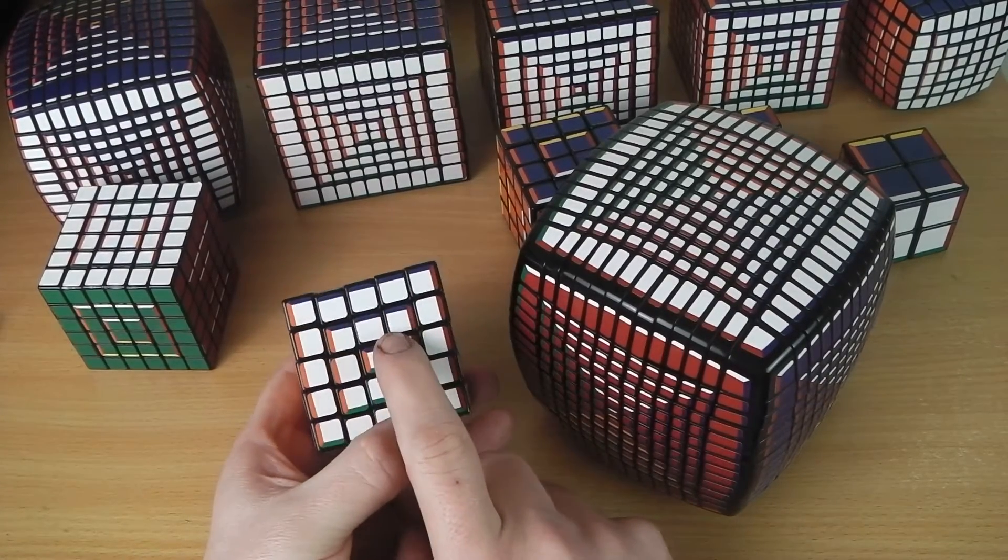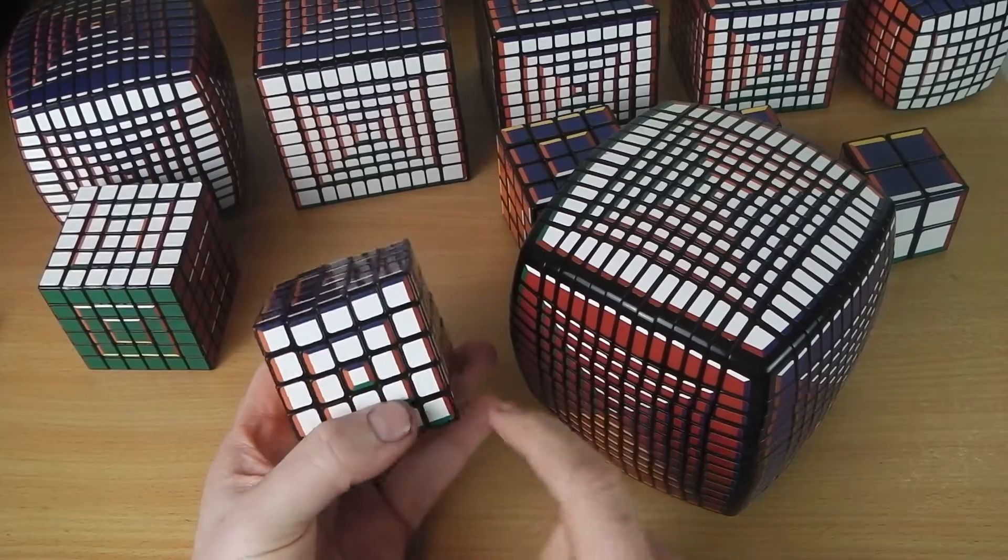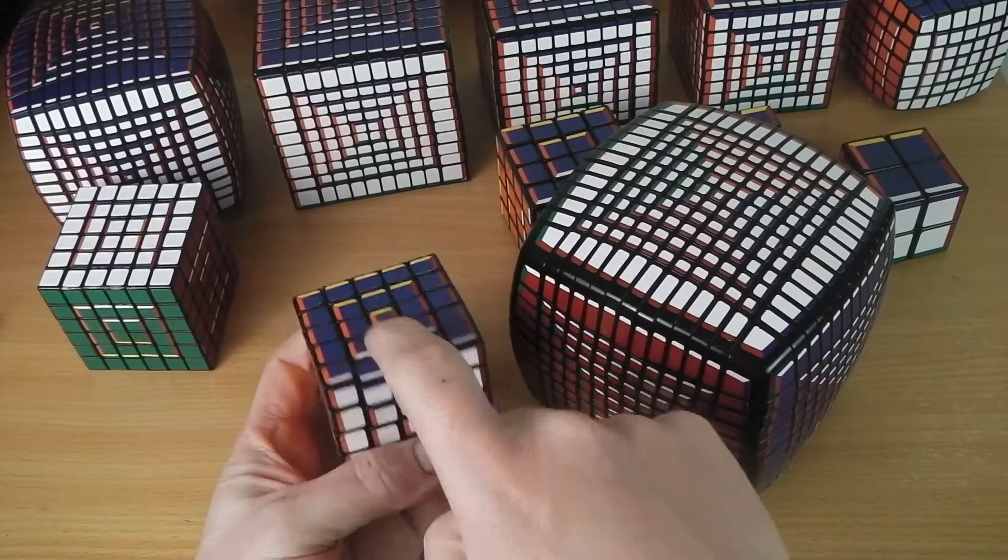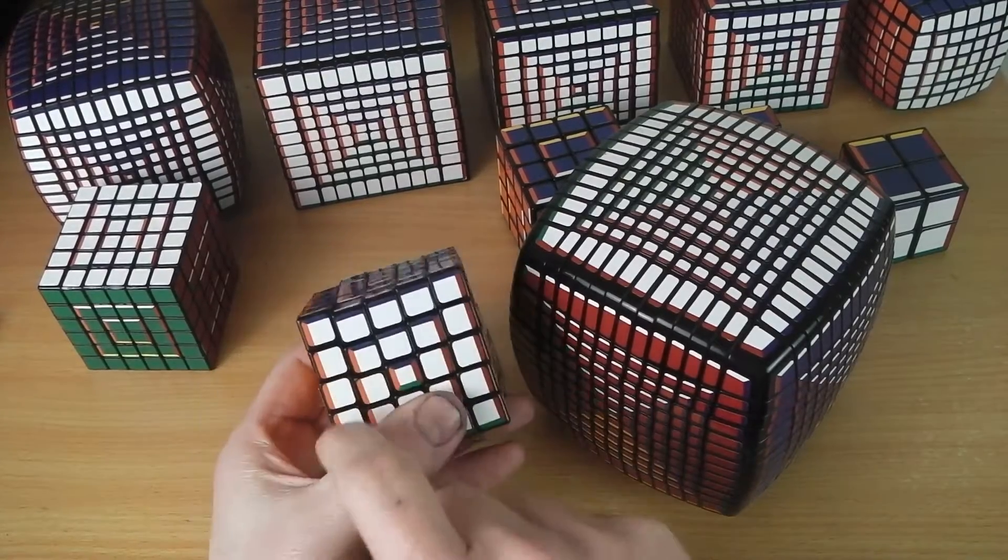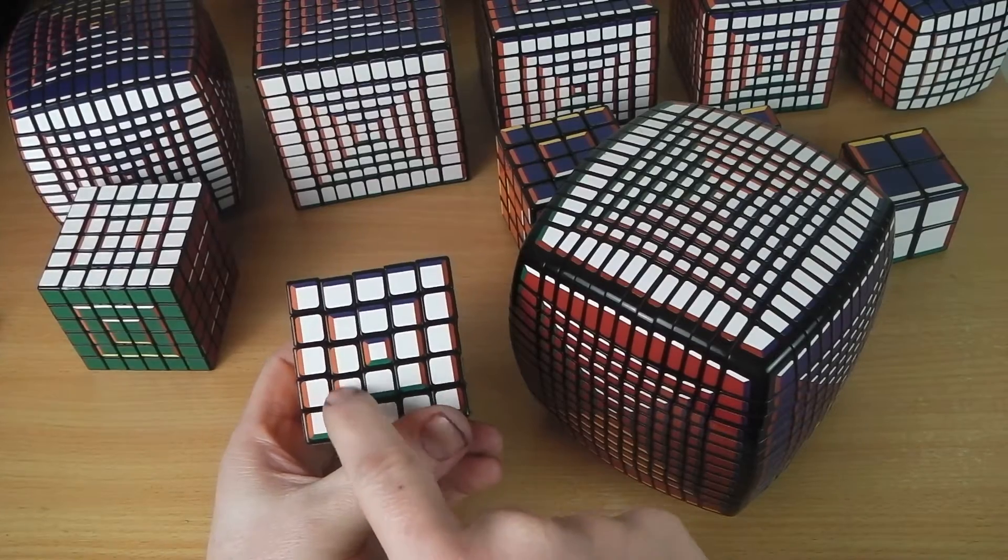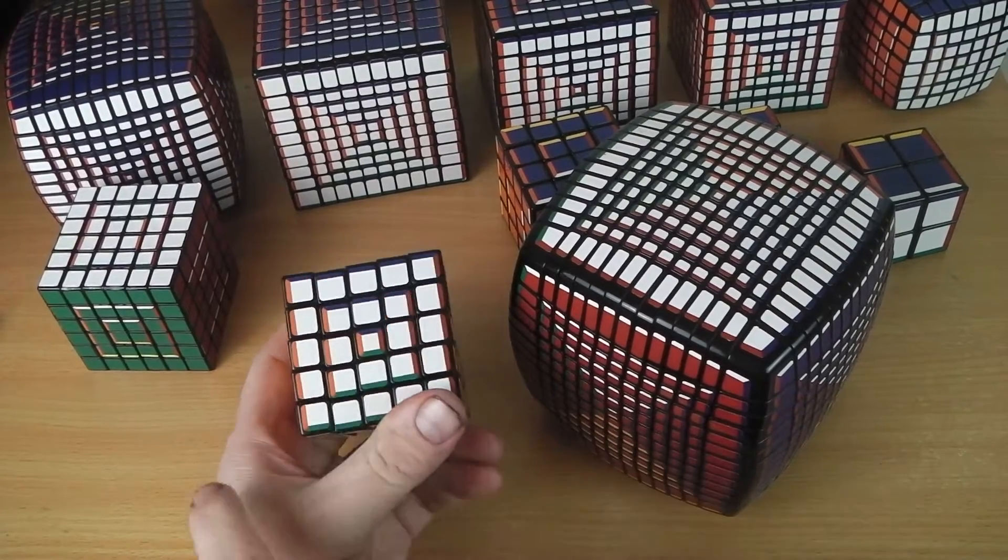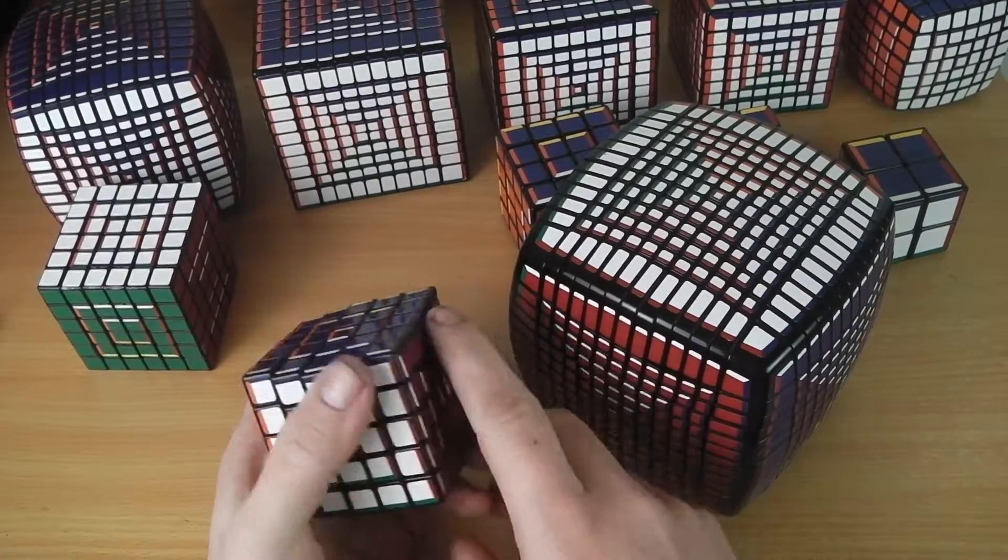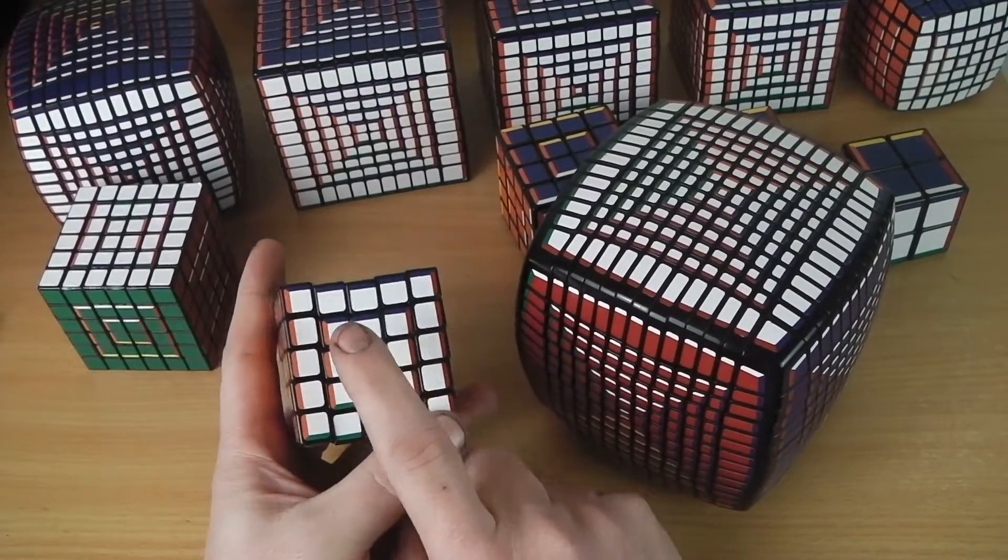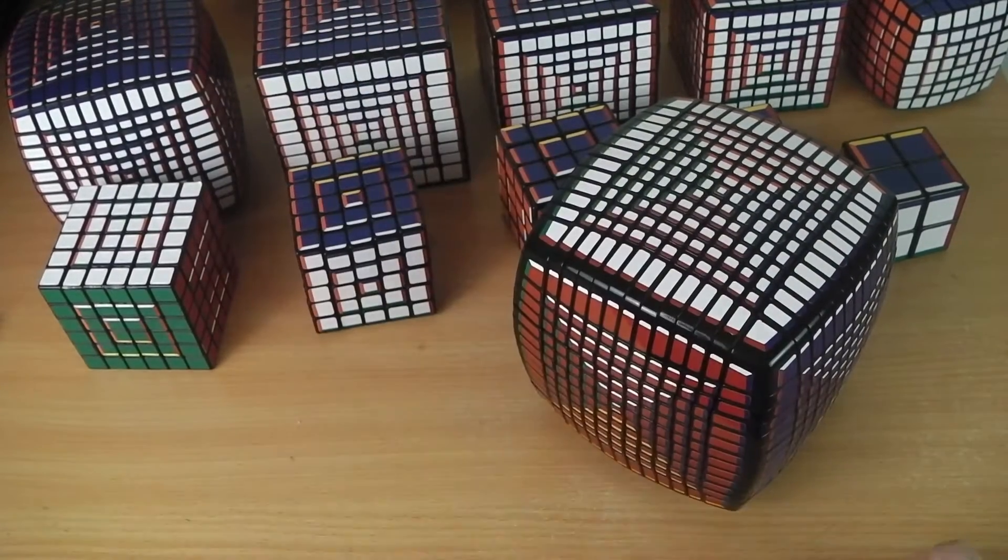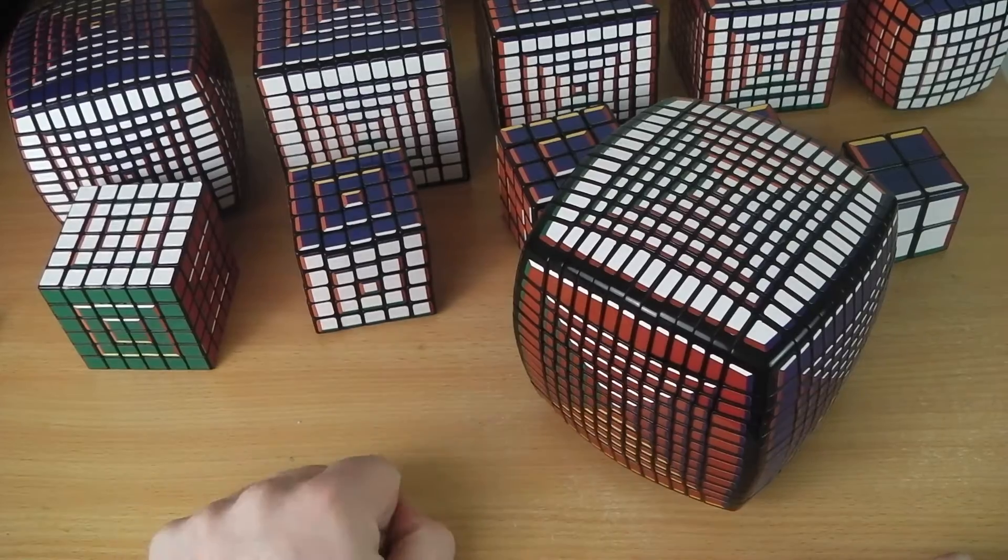With the Pochmann Supercubes, every single piece has a specific position. You can see you've got blue and orange stripes on this particular center piece. The blue points to the blue face, the orange points to the orange face. So that piece in any other position would have blue pointing to this face and orange pointing to this face, and it wouldn't be solved. There's only one specific position you can put every piece in for it to be solved, and it just adds an extra challenge to the high order cube solve.